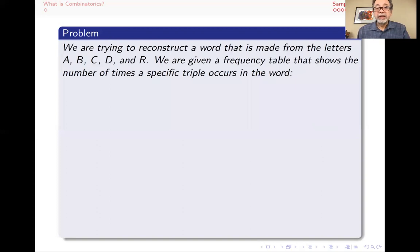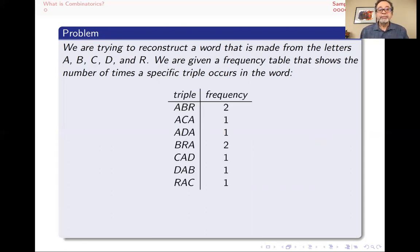Here's another problem, one that has its roots in biology and in trying to sequence genes. Let's say that we are to reconstruct a word, and we know that it's made up of letters A, B, C, D, and R. And we don't really know what the word is, but we have a frequency table. We know how many times a certain triple occurs. So I know that in this word, there are two places that I see ABR as consecutive letters. And there's one place where I see ACA.